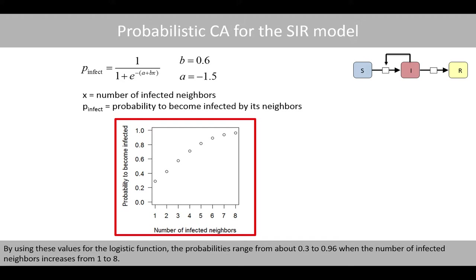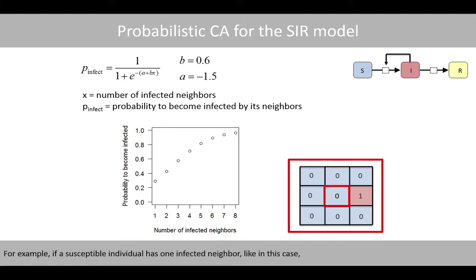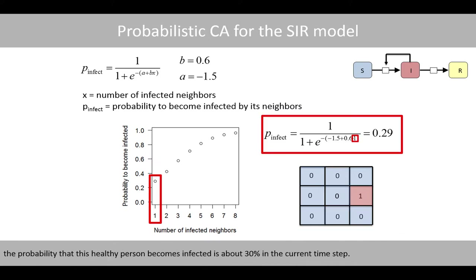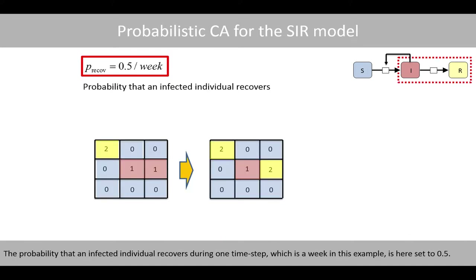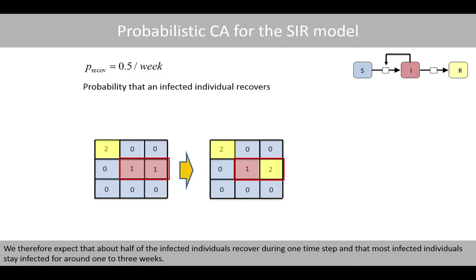By using these values for the logistic function, the probabilities range from 0.3 to 0.96 when the number of infected neighbors increases from 1 to 8. For example, if a susceptible individual has one infected neighbor, the probability that this healthy person becomes infected is about 30% in the current time step. If a susceptible individual has four infected neighbors, the probability is about 71%. The probability that an infected individual recovers during one time step, which is a week in this example, is set to 0.5. We therefore expect that half of the infected individuals recover during one time step, and that most infected individuals stay infected one to three weeks.